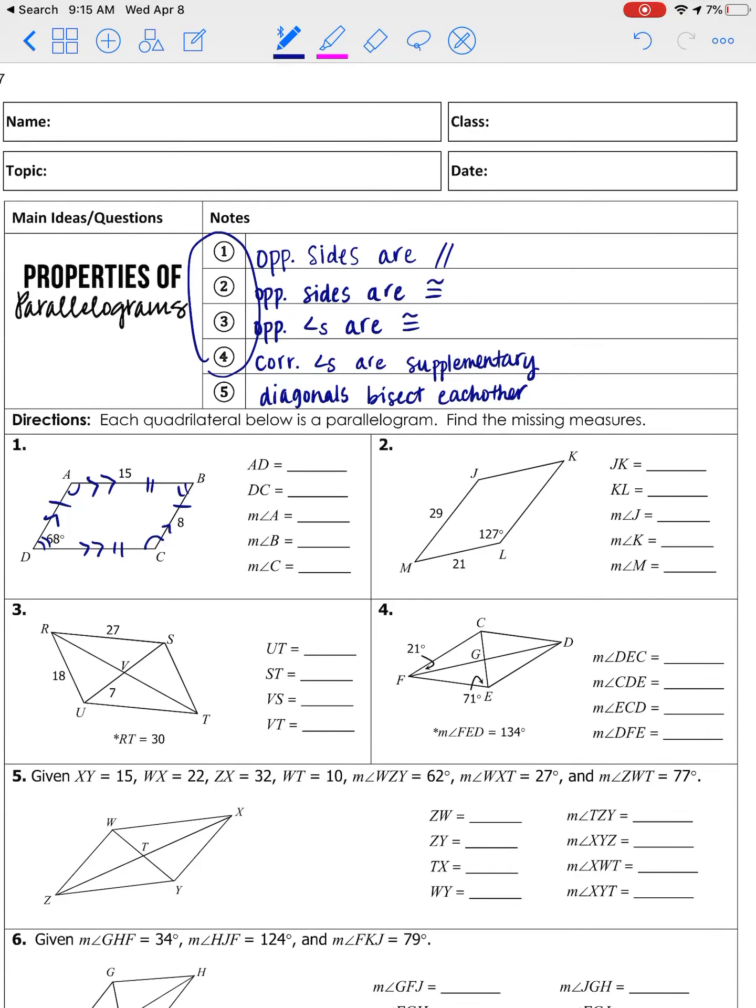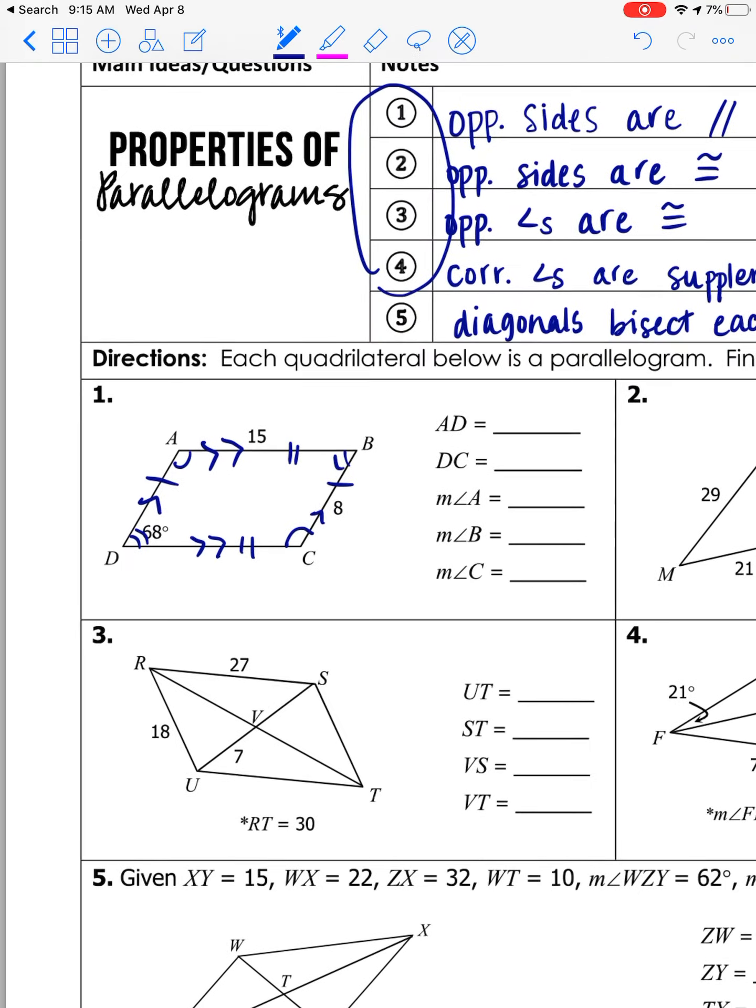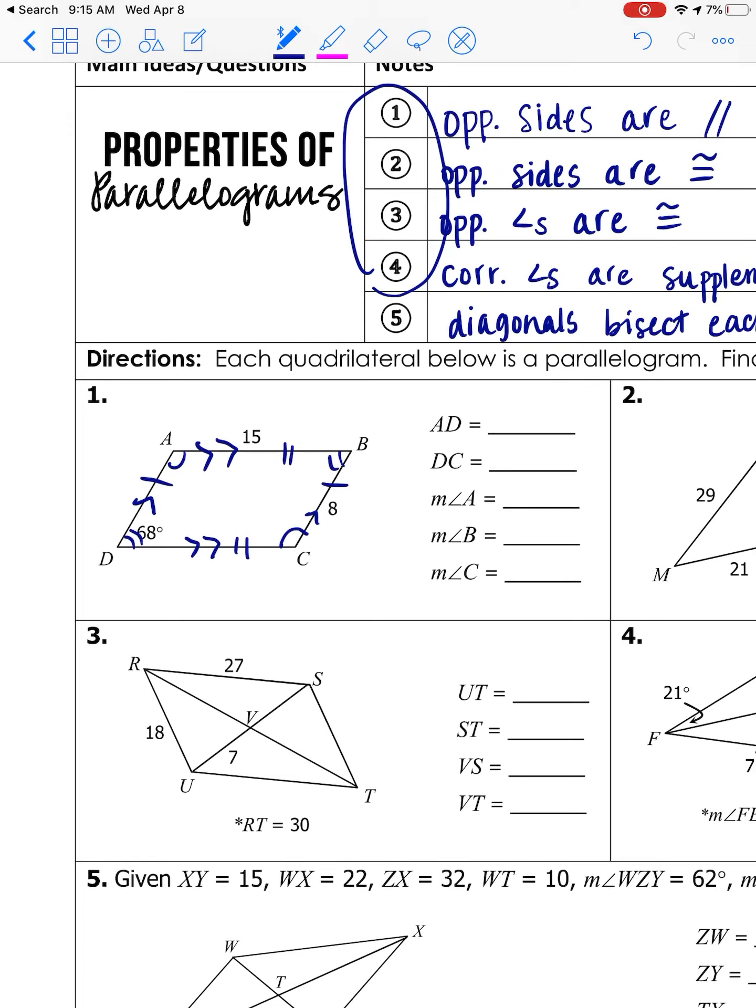So when you're finding missing measurements here, when you're doing sides, that's really easy because they have to give you one of each. They can't expect you to find, let's say they don't give you BC. There's no way for you to get that or AD just knowing that AB is 15. So they have to give you information about each set of sides. So we know that BC is eight and that's congruent to AD. So that's eight. We know that AB is 15. So we know that DC is congruent, it's 15. So sides are really easy.